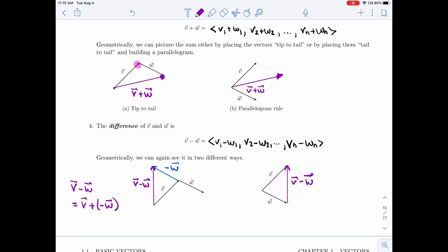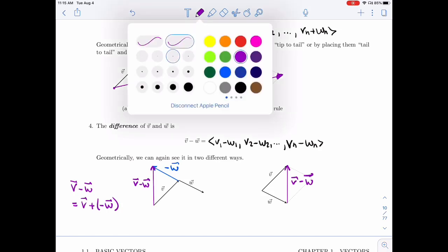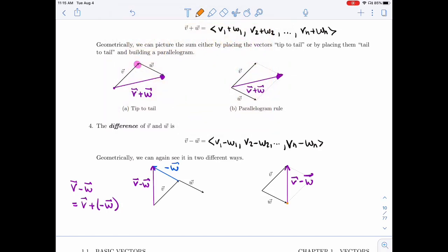It's the other diagonal of the parallelogram. And one way to think of this that I like is if I start at this point, I follow W backwards, hence the minus W and V forward. And so I get minus W plus V or V minus W.